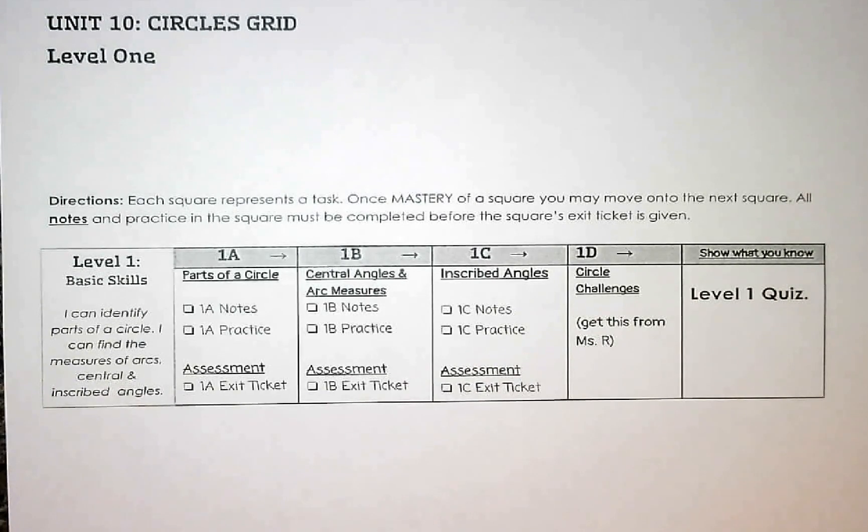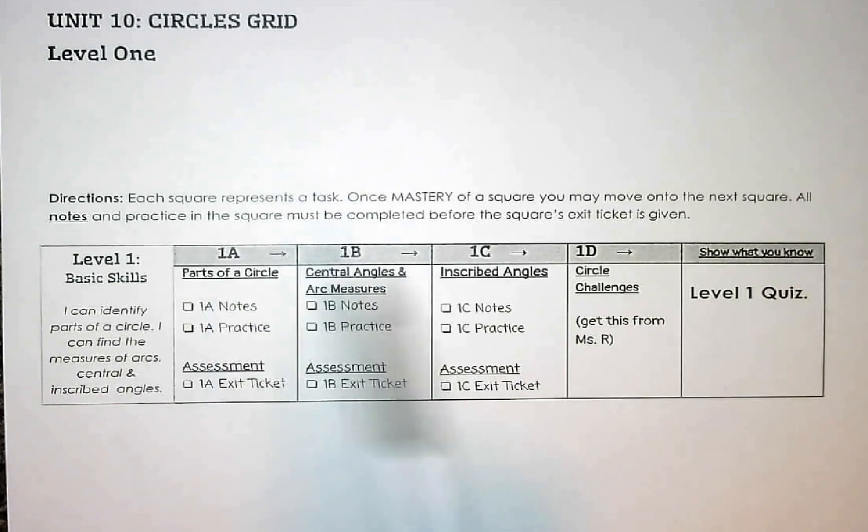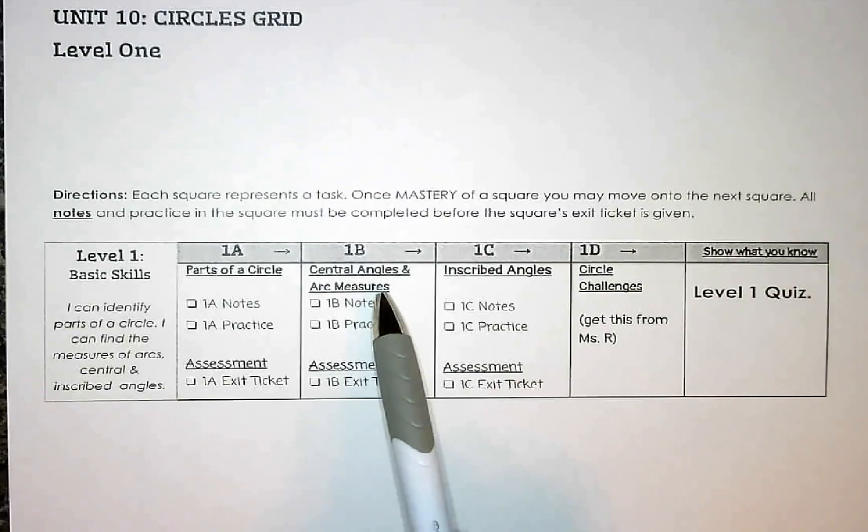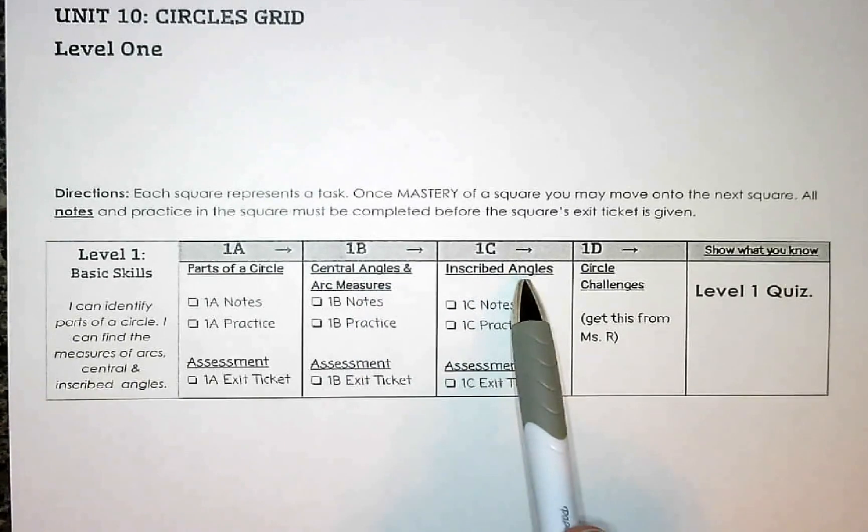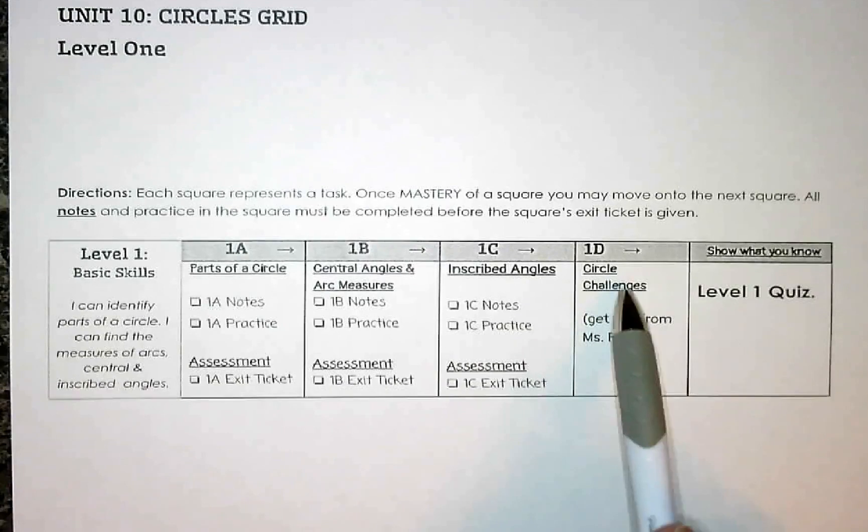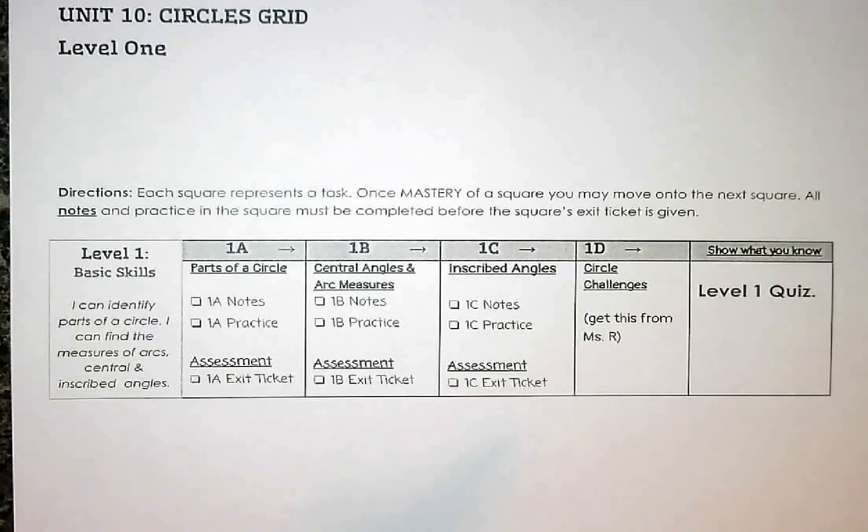Hello, welcome to unit 10 circles. What you see in front of you is the grid for level one. You can see level one is going to cover these three main areas: parts of a circle, which I hope a lot of it is review for you, central angles and arc measures, and inscribed angles. Then we'll go on to a couple of challenges dealing with circles and we'll finish the level with our quiz. So let's get started.